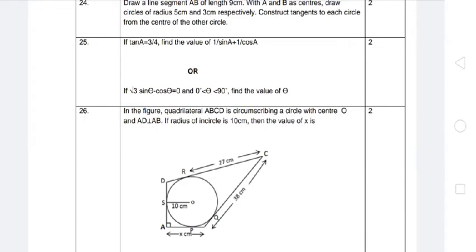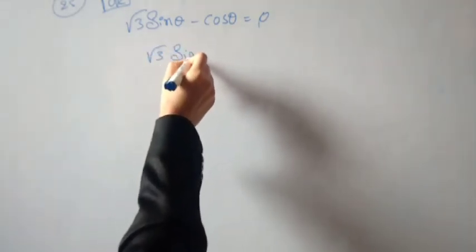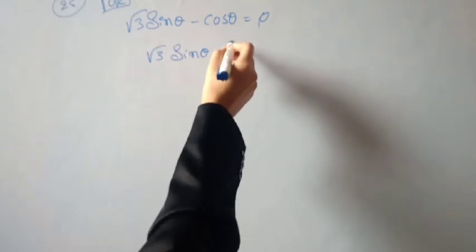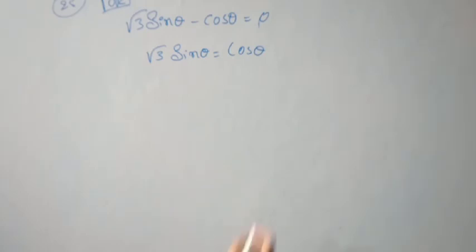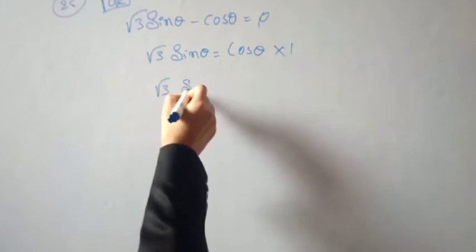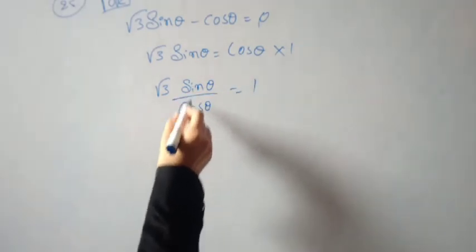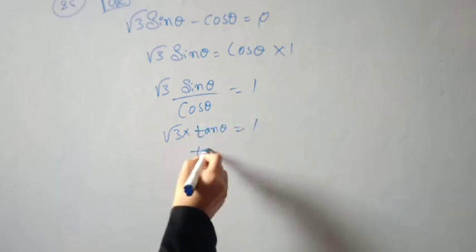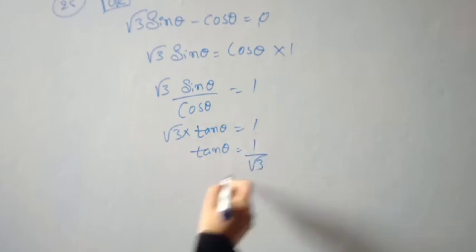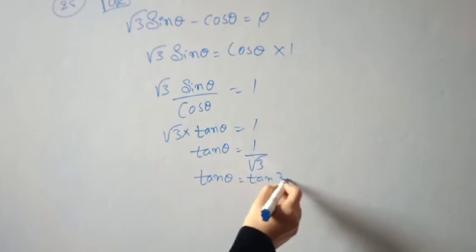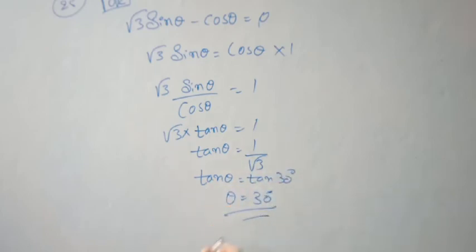Question 25, second part: if √3 sin θ - cos θ = 0 and 0° < θ < 90°, find the value of θ. Rearranging: √3 sin θ = cos θ, so sin θ/cos θ = 1/√3, meaning tan θ = 1/√3. Since tan 30° = 1/√3, tan cancels and θ = 30°.